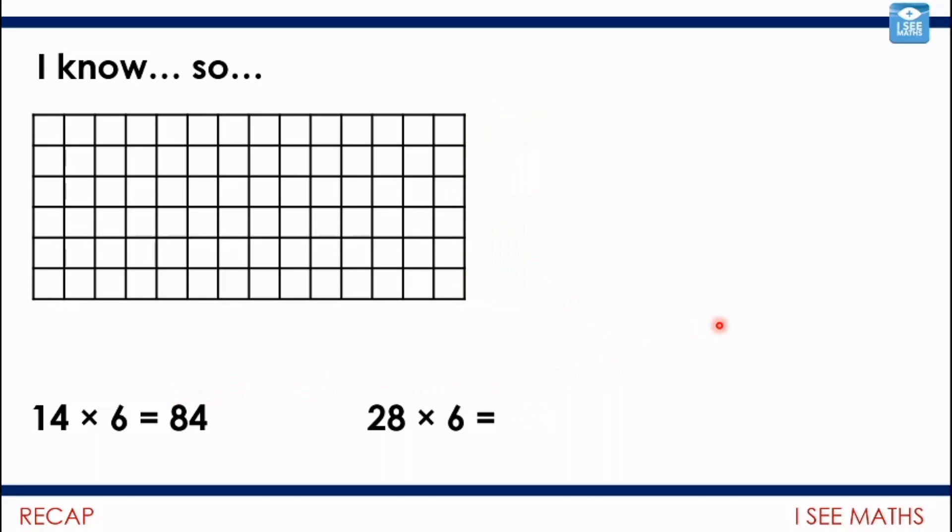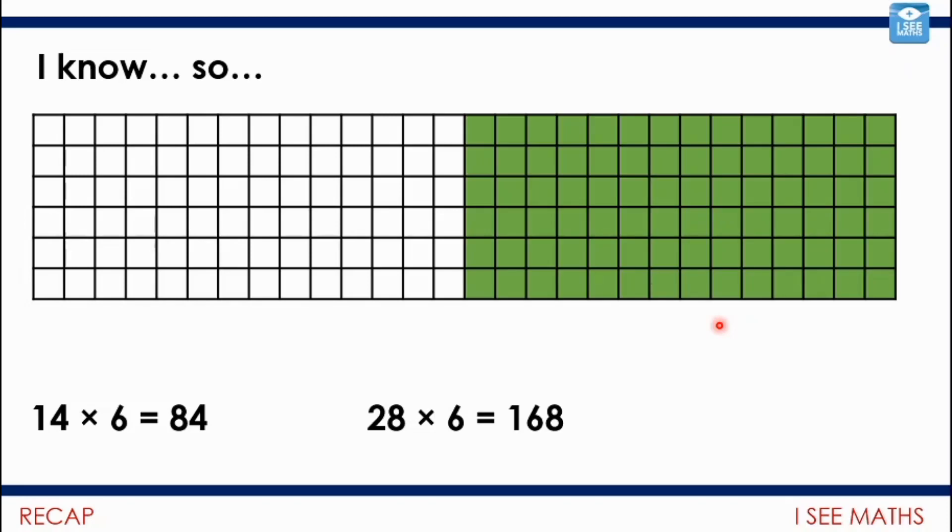Let's have a look at this one. 14 times 6 is 84. Well, what about 28 times 6? What's going to stay the same? What's going to change this time? Okay, should we tell the screen. Tell the screen what's going to, how's the picture going to change? Or how can I use one to work out the other? Okay, should we have a little look? Well, 14, there's 14 times 6. 28 times 6, it's going to be another lot of 14 sixes. It's going to be double. So I can just double the 84. 168 there overall.